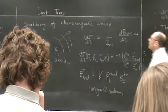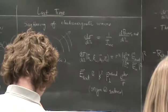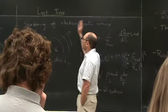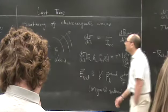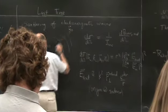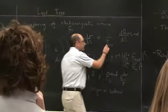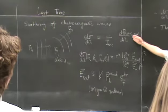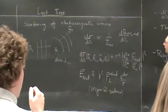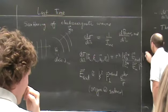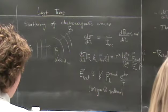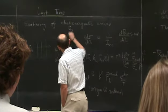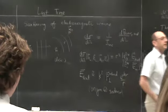Generally speaking, we define the differential scattering cross-section as the ratio of the differential electromagnetic power scattered into some direction, divided by the incident flux of energy — the intensity. Expressing that power in terms of the Poynting vector, the differential scattering cross-section can be expressed as this ratio times the distance R squared from the scattering center taken at the origin.